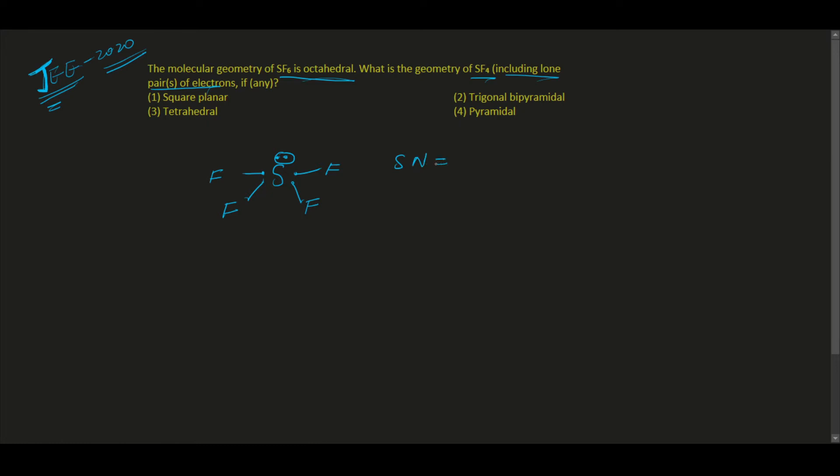What is the formula of steric number? Number of surrounded items plus lone pair. So we have four surrounded items, or we can say four sigma bonds, plus how much lone pair? One lone pair.